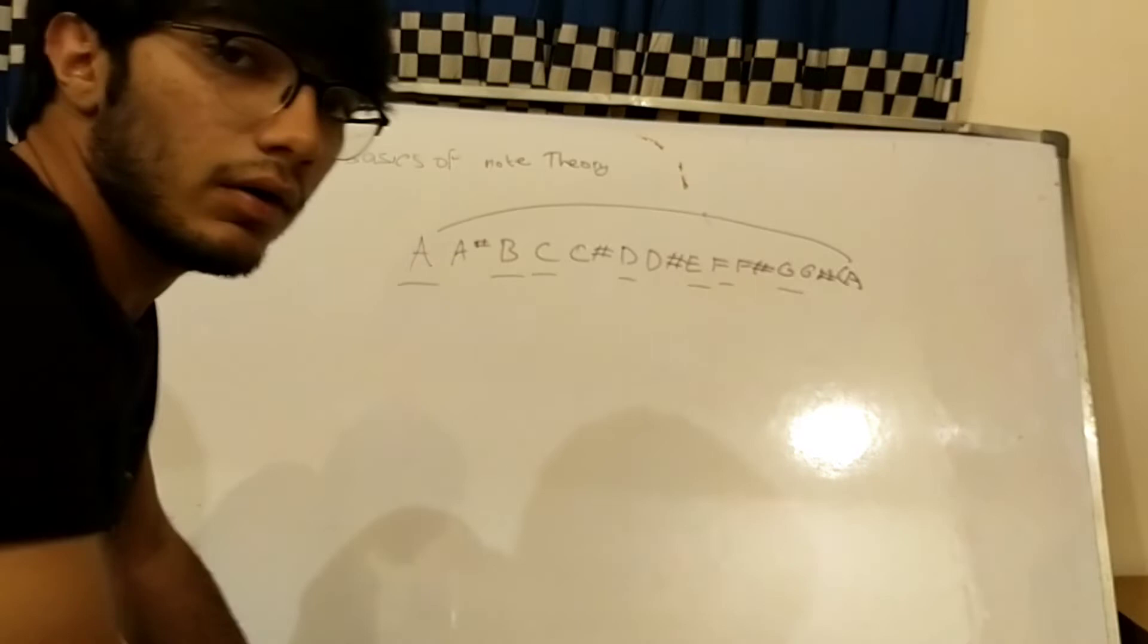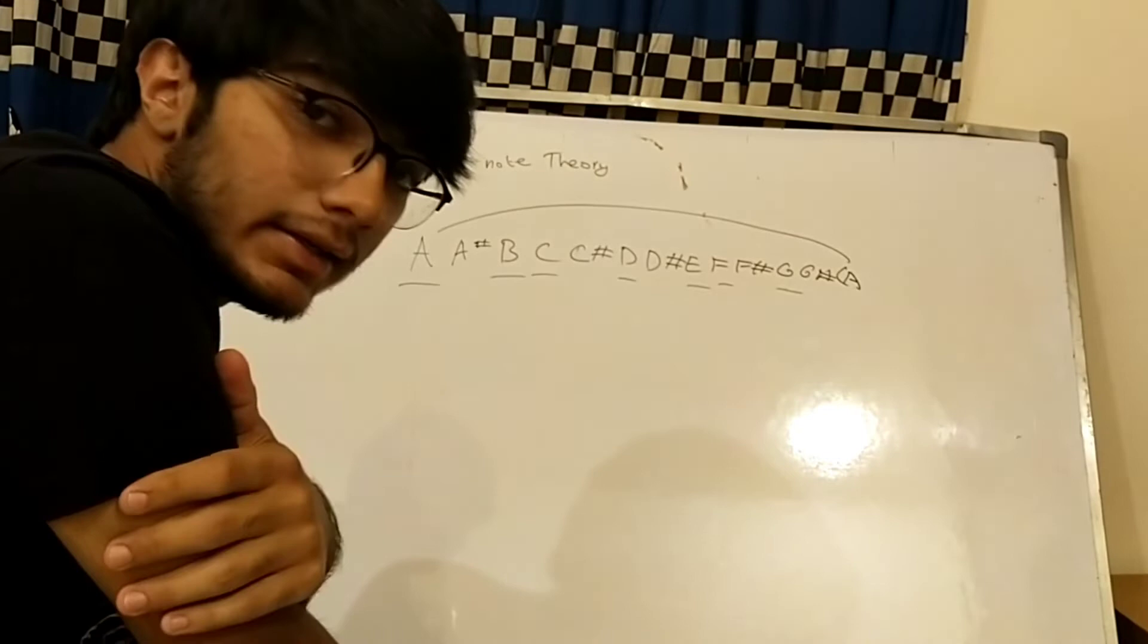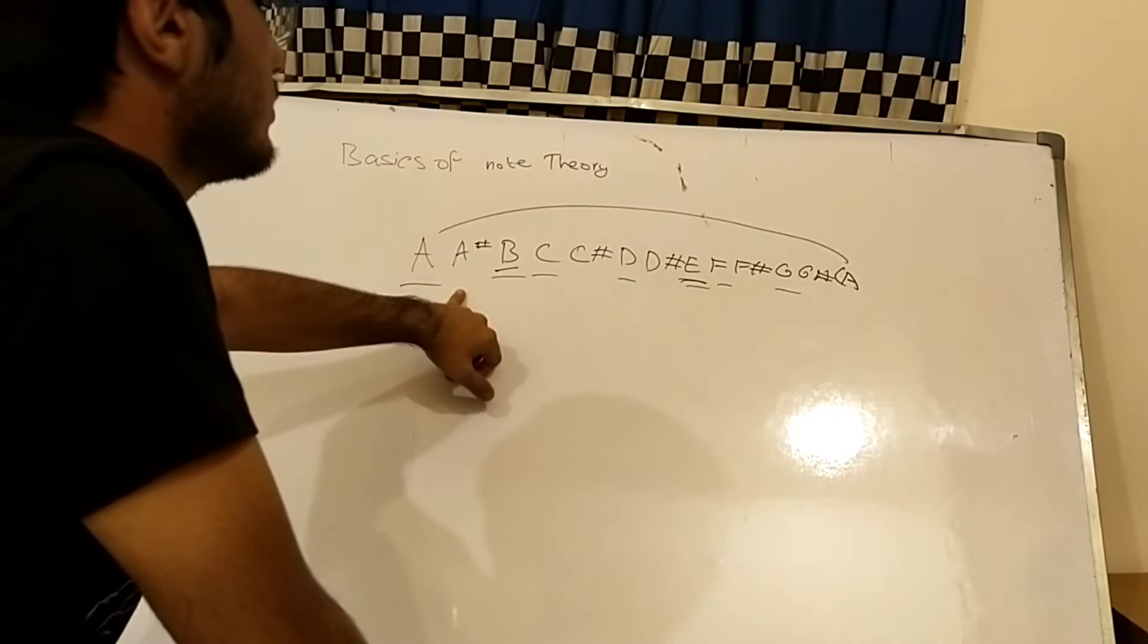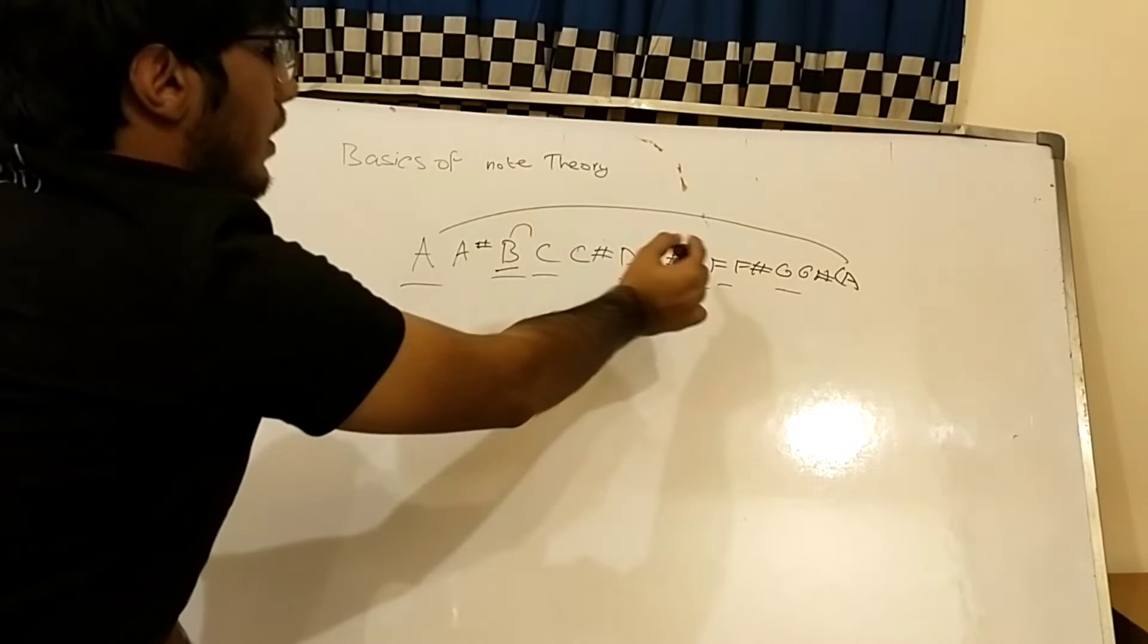And the sharps in between are called accidental notes. So every note except for B and E has a sharp. Only B goes direct to C, and E goes directly to F.